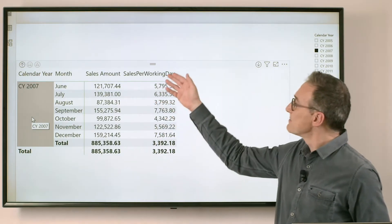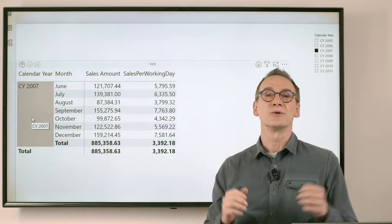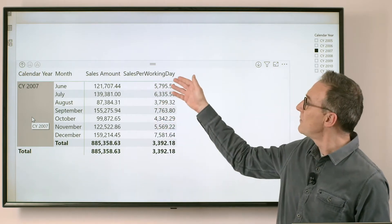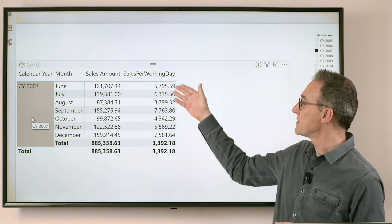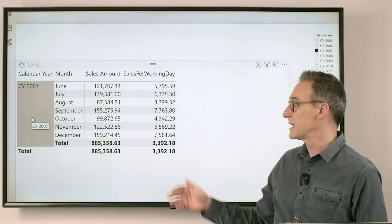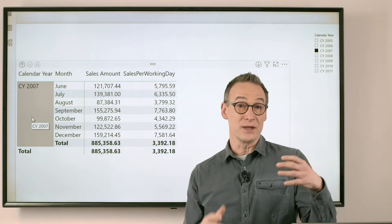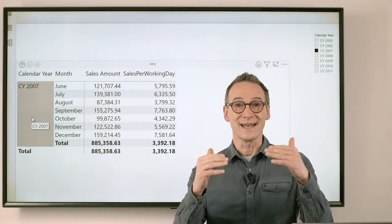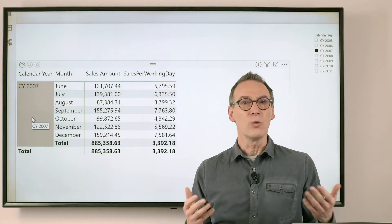Well, sales per working day should look like some sort of average, but all the values in every month is greater than 4,000, and it's kind of weird that the last value, the average over the entire year, is less than 4,000. Where is the problem?